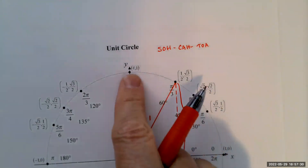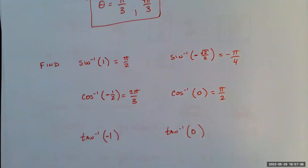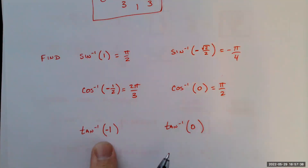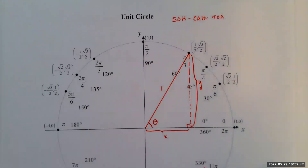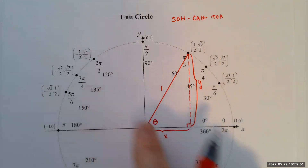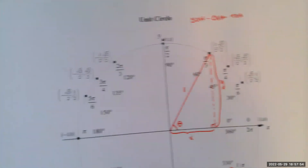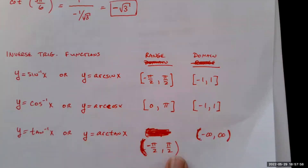For inverse tangent of negative 1, the range is negative π/2 to π/2, just like inverse sine. Since the value is negative, we're looking in the fourth quadrant region within that range — we cannot include values from the third quadrant.